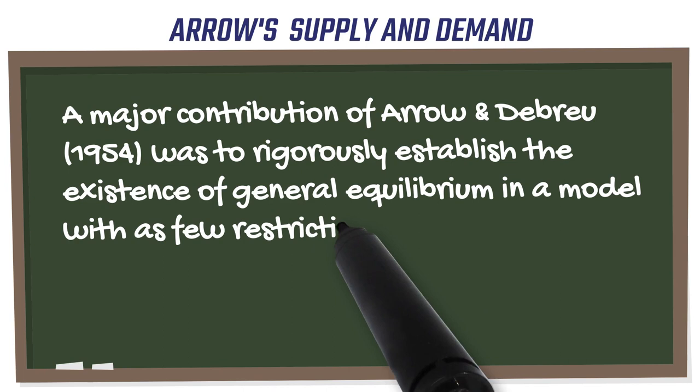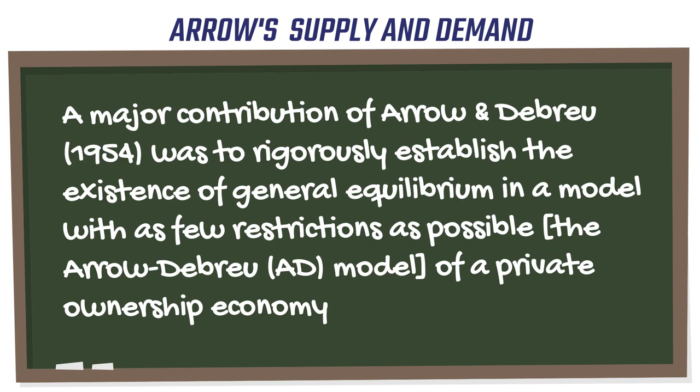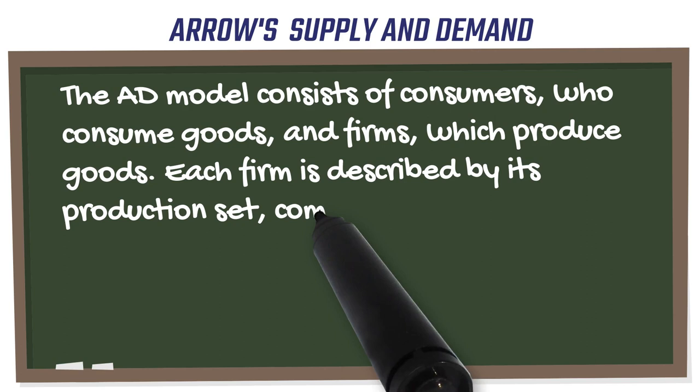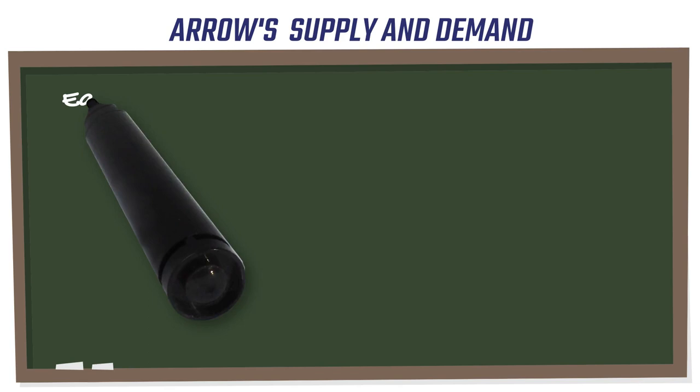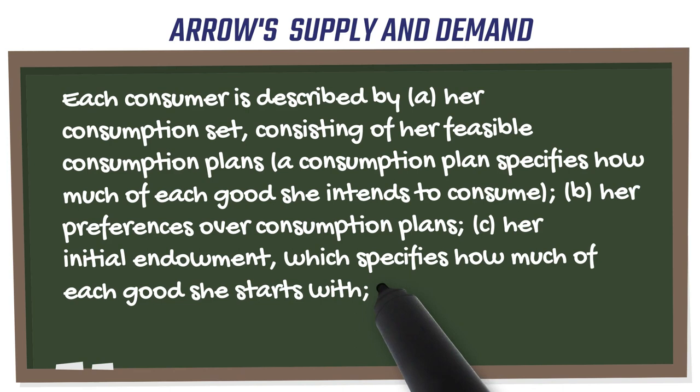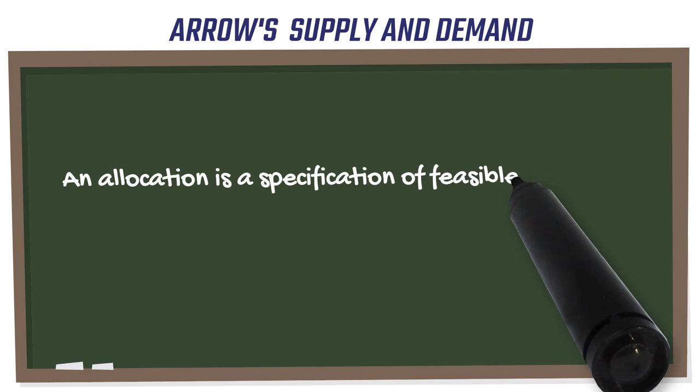Working at times with the French economist Gérard Debreu, Arrow demonstrated that the intuitions from a single market could be generalized. First, there was a generalized equilibrium at which prices equalized supply and demand in every market at once. Second, this equilibrium was efficient. And third, any efficient allocation of resources could be reached by redistributing wealth and then letting competitive markets take over.